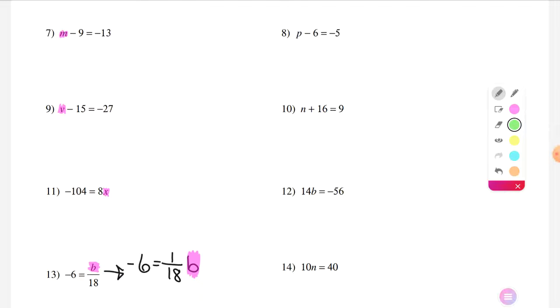Okay, constants. Number seven. Tatum, what are my constants in number seven? Constants. M. Almost. Negative nine. Yep. Negative nine. And? Negative 13.